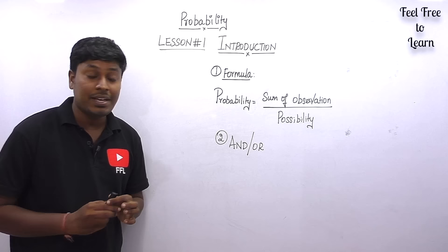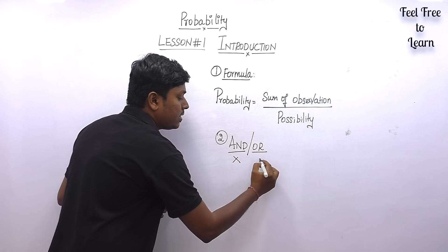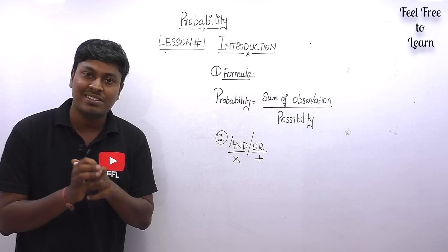The second important thing: in a question, wherever you find the word 'and' you should multiply, and wherever you find the word 'or' you need to add. These are the most important things before solving each and every question in the topic probability.